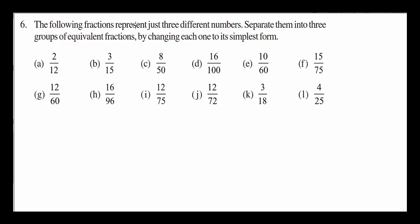The following fractions represent just 3 different numbers. Separate them into 3 groups of equivalent fractions by changing them to the simplest form. Let's reduce all of them. 2 over 12 is simple. 1 over 6. Right. It's 1 over 6. As simple as that.